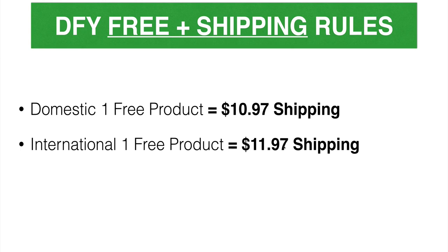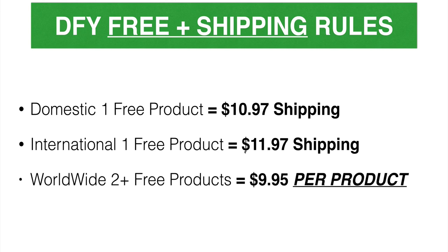If someone international comes in and wants to purchase a free plus shipping item, we charge them $11.97. Because they're international, we bump the shipping price up by a dollar. So the item is free, but they're paying $11.97 for shipping and handling. Now, if anybody in the world — whether they're in the US, London, Australia, New Zealand, Zimbabwe — if people come in and buy two or more free products, then we charge them $9.95 per product.